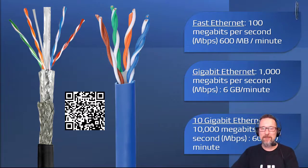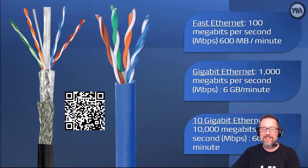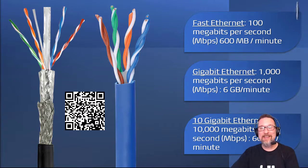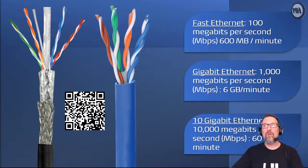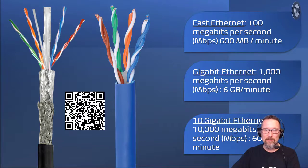And it gets better — 10 Gigabit Ethernet is 10,000 megabits per second, that's like 60 gigs in 60 seconds. Imagine — that is insane. So there you go, Ethernet cables. That's why, if you ask yourself why aren't all our networks just wireless, it's because the cables still give us the best data transfer speeds right now.